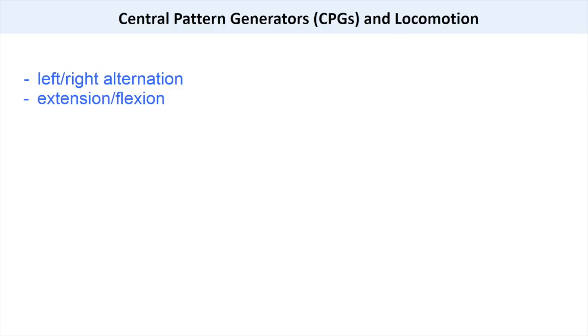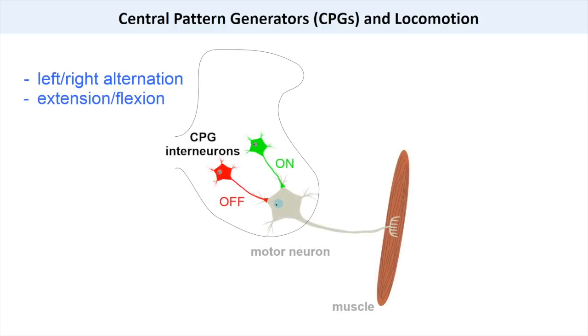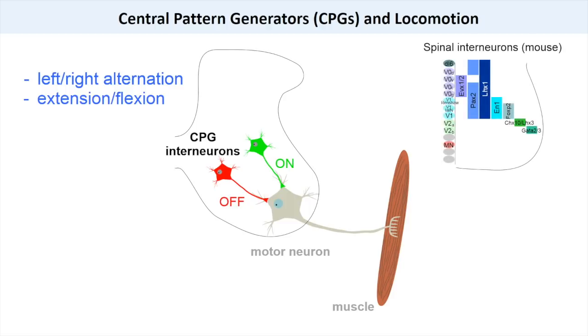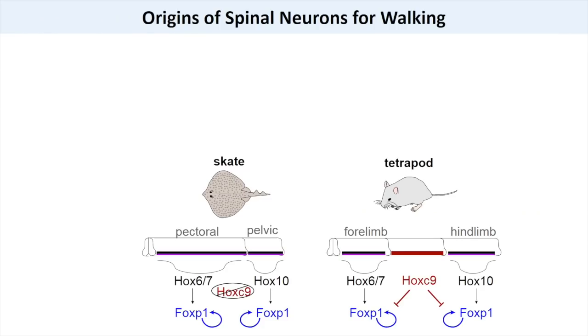Walking and other types of rhythmic behaviors rely on networks of neurons called central pattern generators, or CPGs. In land vertebrates, CPGs control both the left-right alternation and reciprocal extension and flexion of legs during walking. CPGs are composed of neurons that either excite or inhibit motor neurons. Like motor neurons, CPG interneurons can be defined by expression of specific transcription factors. We found that many of these CPG neurons are shared between skates and land vertebrates. Our results indicate that both skates and land vertebrates use highly conserved gene regulatory networks to generate the neuronal populations necessary for walking.